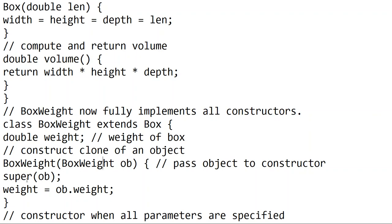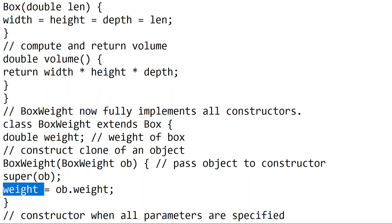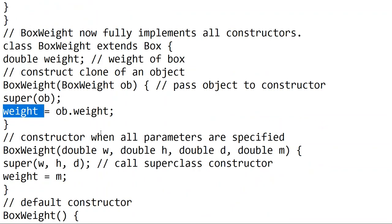We use super — this is very important. This is the super keyword. In the BoxWeight constructor, we call super with parameters width, height, and depth. This calls the parent class constructor.